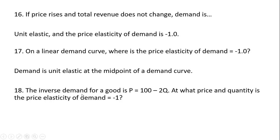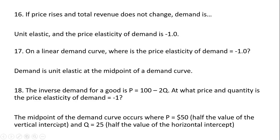Question 18: The inverse demand for a good is P = 100 − 2Q. At what price and quantity is the price elasticity of demand −1? We need to find the midpoint of the demand curve. That occurs where price equals 50 — take the vertical intercept and divide by 2, so half the value of the vertical intercept. Substituting P = 50 into the equation and solving for Q gives Q = 25, which is half the value of the horizontal intercept.